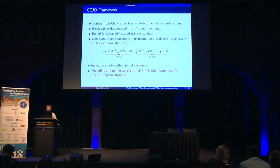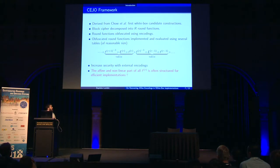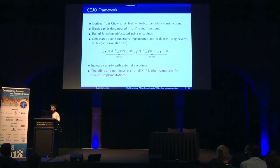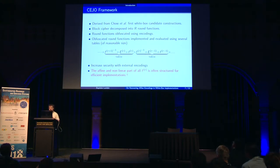You can't just pick the encodings at random because the implementation would be way too huge. So you need to give some structure to those encodings by splitting them into two parts: the affine and the nonlinear part. The nonlinear part can be recovered very efficiently using an algorithm by Biryukov et al. So most of the time, the hard part is to recover the affine part of the encodings.